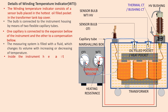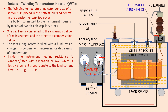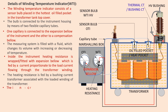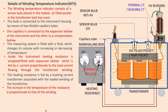Inside the instrument, a heating resistance is wrapped or fitted with the expansion below, which is fed by a current proportionate to the load current flowing through the transformer winding. The heating resistance is fed by a boosting CT associated with the loaded winding of the transformer. The increase in the temperature of the resistance is proportionate to that of the winding.